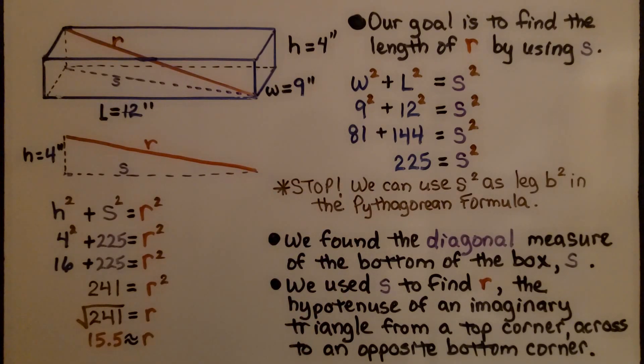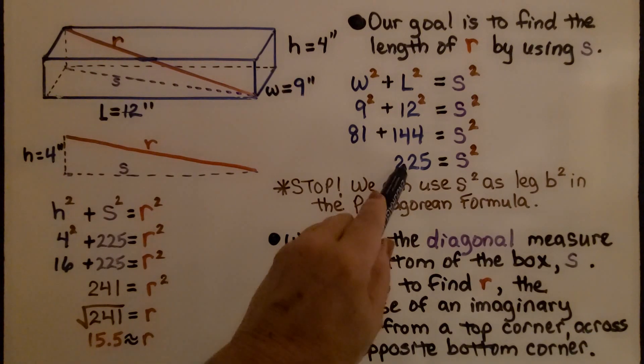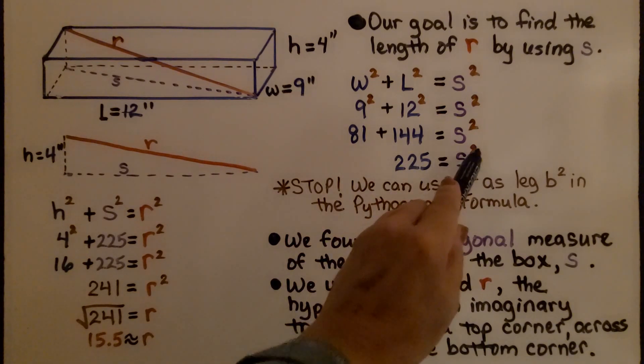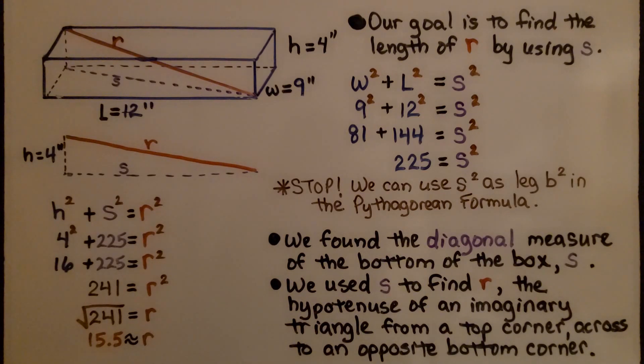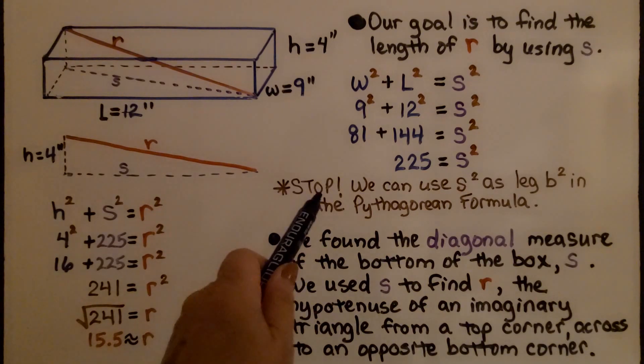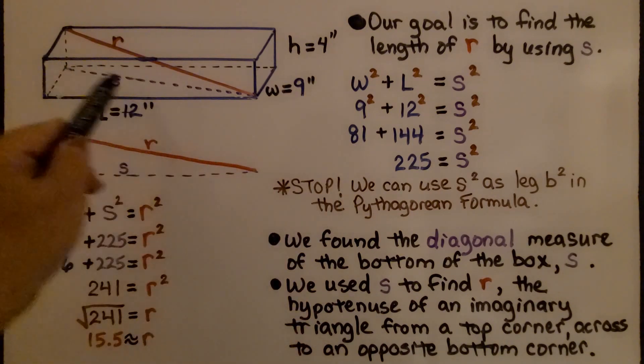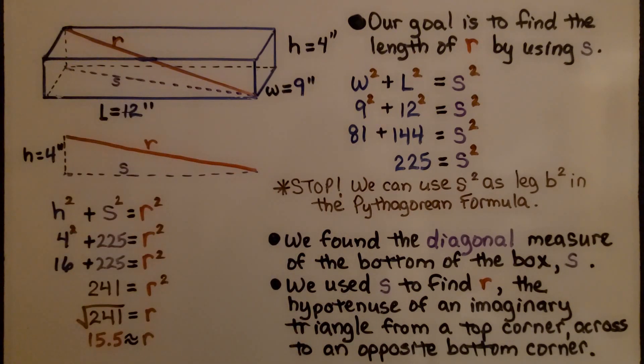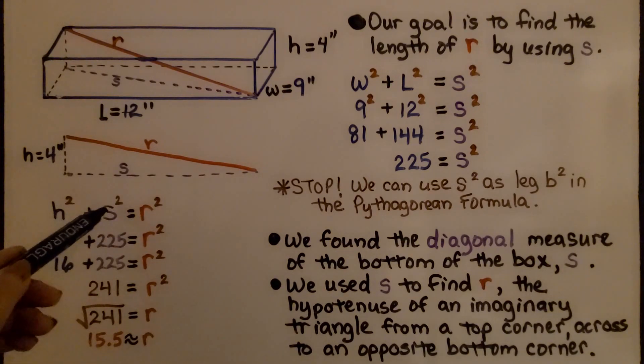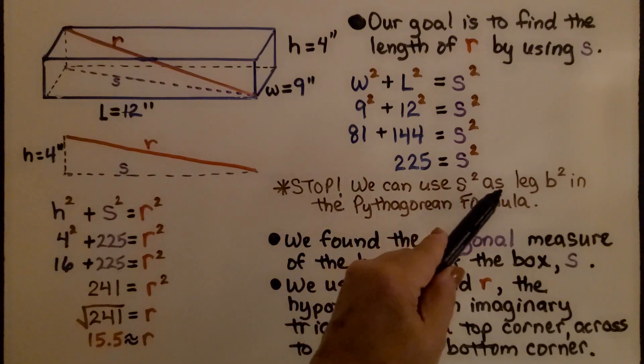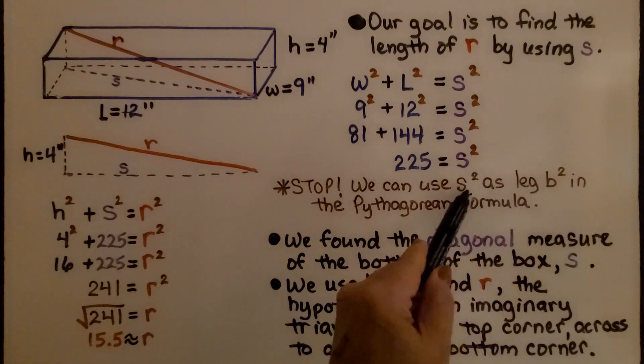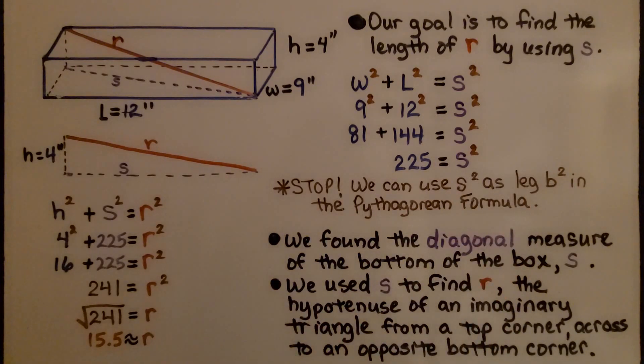We know that is s squared. Now, before when we did this in the other videos, we put a radical sign around the 225 to find the square root of 225 and then removed that 2 exponent. Well, this time we're not. We're going to stop right here because we need to use s squared as a squared plus b squared equals c squared. We need that to be squared. So we're going to use it as leg b squared in the Pythagorean formula.